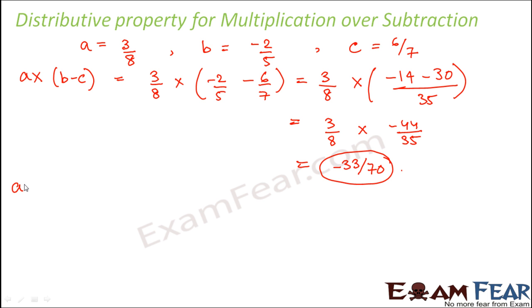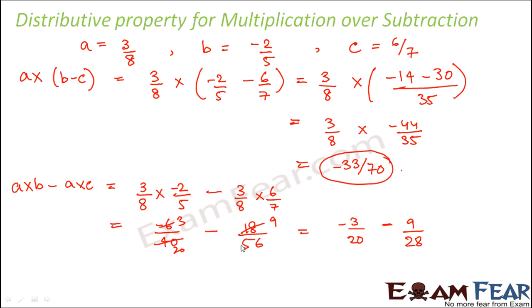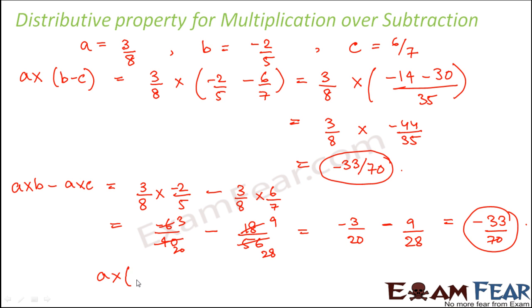Now let us calculate a into b minus a into c: 3/8 into −2/5 minus 3/8 into 6/7. This gives −6/40 minus 18/56, which simplifies to −3/20 minus 9/28. This also comes out to be −33/70. Both sides are equal, so a into (b minus c) equals a into b minus a into c.